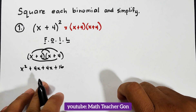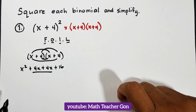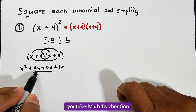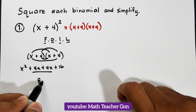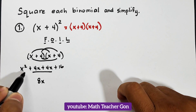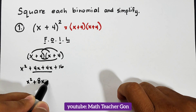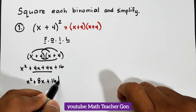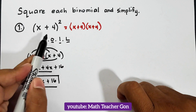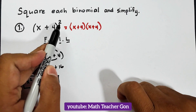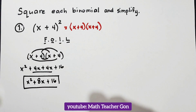After using the FOIL method, we combine the middle like terms: 4x plus 4x is 8x. Then copy x squared plus 16. This is now the square of x plus 4, or the expanded form of this given binomial.